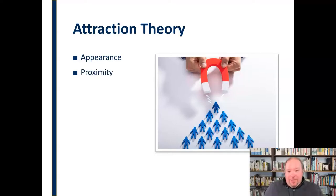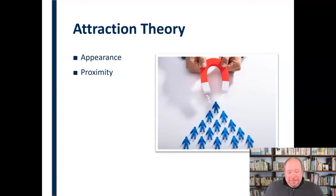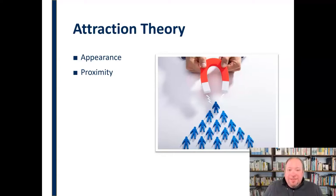Proximity is another factor of attraction, according to attraction theory — the idea that we are more likely to form relationships with people who live near us than with people who are far away. The internet has certainly adjusted this a little bit, but still, if we think about the people with whom we are in relationship — romantically, friendships, work relationships — these are people we have relationships with because we are nearby them.